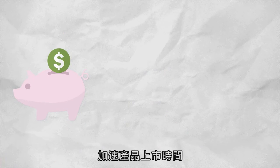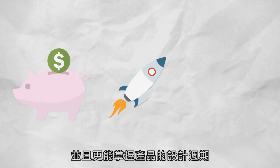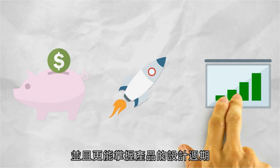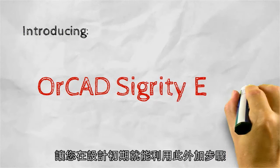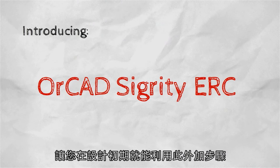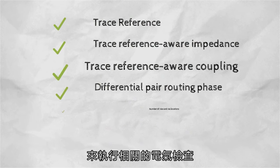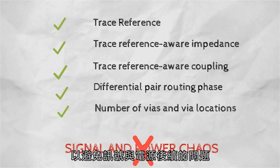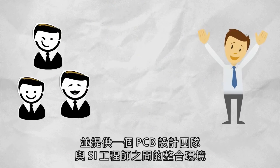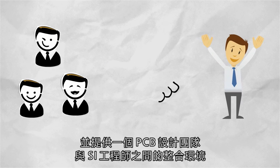Wouldn't this save your company money, help you get to market faster, and make your design cycle more predictable? Only using OrCAD Sigrity ERC are you able to perform this level of electrical rule checking early in the design stage and create an efficient process, eliminating signal and power integrity chaos and providing a collaborative design environment between your PCB design team and signal integrity expert.